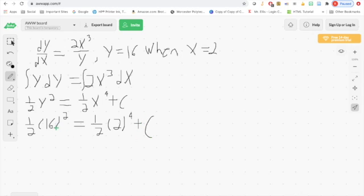Now, we can start evaluating. We have 16 squared is 256. 1 half of that is 128. Over on this side, we have 2 to the fourth is 16. 1 half of that is going to be 8. And then, plus c. In this case, we have a pretty large c value of 120. We have now evaluated for the constant of integration.